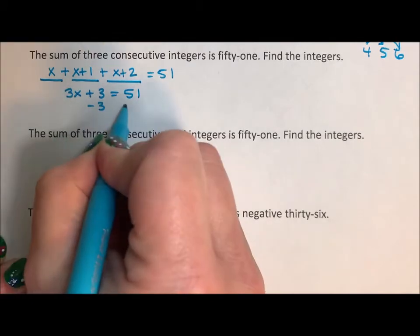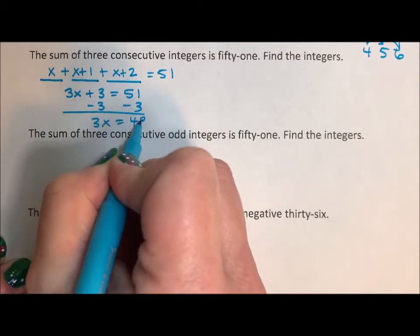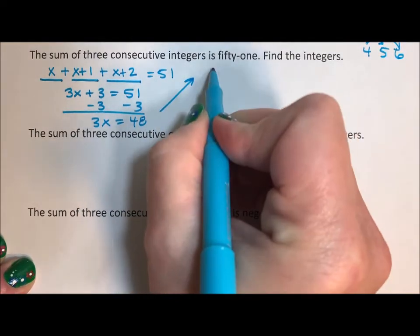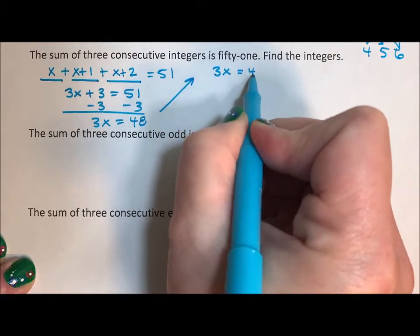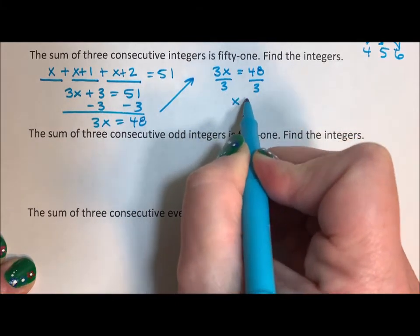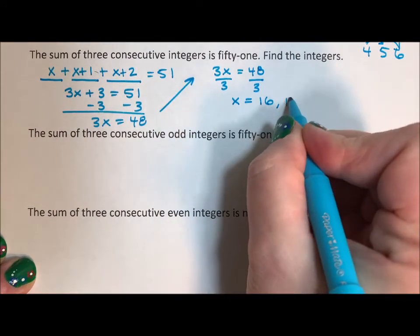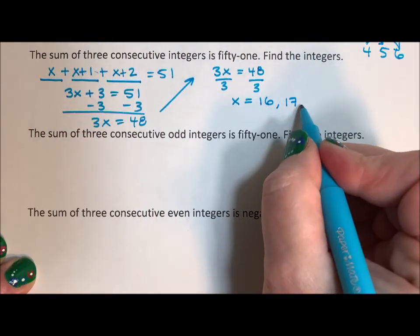Subtract the three off. 3x equals 48. Divide by three. x is equal to 16. That's our x. x plus one is 17, x plus two is 18.